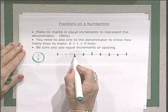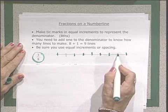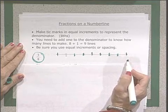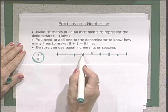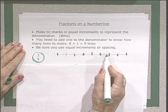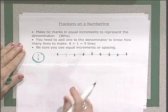We have one, two, three, four, five, six, seven, eight, nine lines, and we have one, two, three, four, five, six, seven, eight equal spaces.